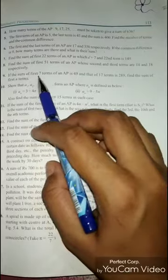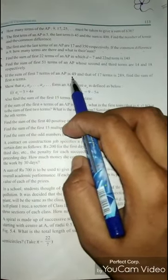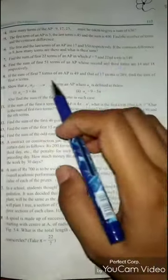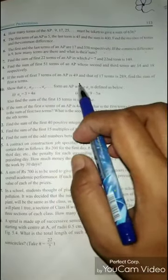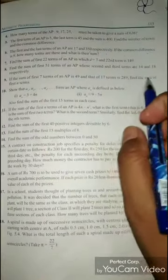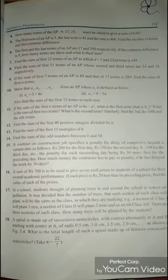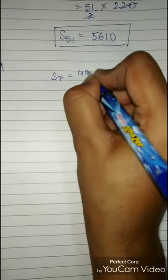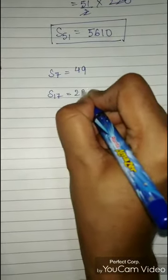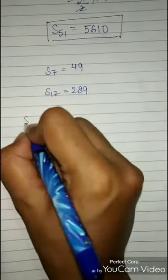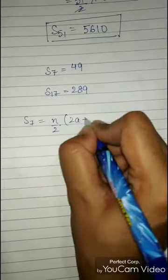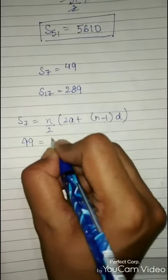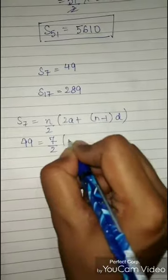Question 9: If the sum of first 7 terms of an AP is 49 and that of 17 terms is 289, find the sum of first n terms. Given: S7 = 49 and S17 = 289. We write the formula for S7: 49 = 7/2 × (2a + 6d).